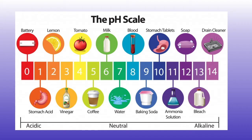Do you know what type of acid is found in your stomach? If you guessed HCl, or hydrochloric acid, you are correct. If you have high levels of HCl, it can cause problems like acid reflux or heartburn, which is why you may take an antacid to prevent acid buildup.